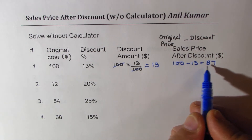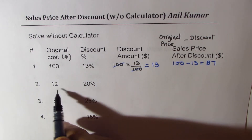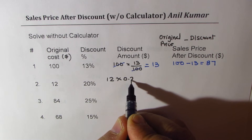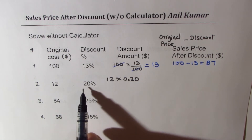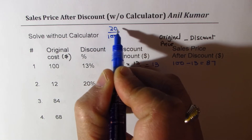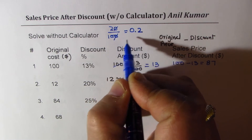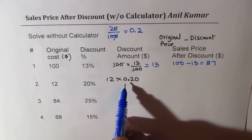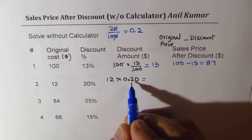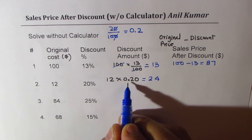Next: 20% on $12. 20% on 12 means 12 times 0.20. Since 20% means 20 over 100, dividing by 100 means moving the decimal, making the number smaller, so you get 0.2. Now multiply by 2: 12 times 2 is 24. We need one number after the decimal, so we get 2.4.